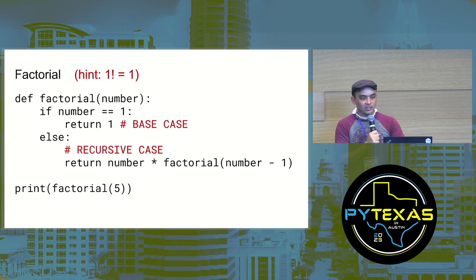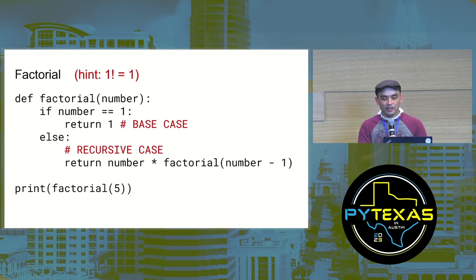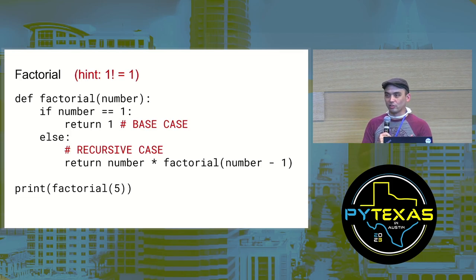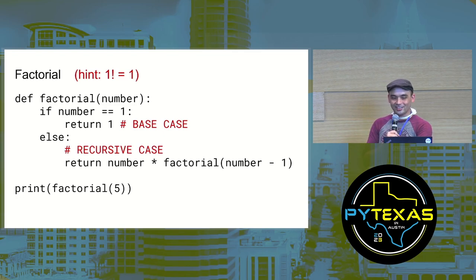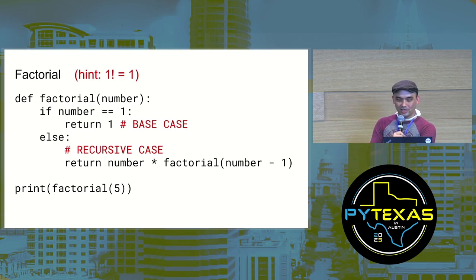Your recursive function must always have at least one base case and one recursive case. If you don't have a base case, your function will recurse forever and cause a stack overflow. If you don't have a recursive case, it's not actually a recursive function — it's never calling itself.